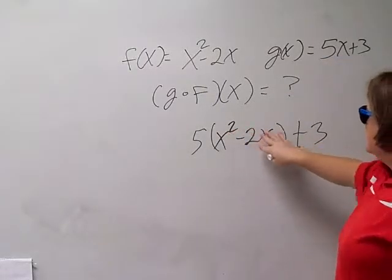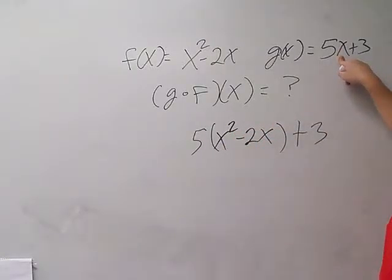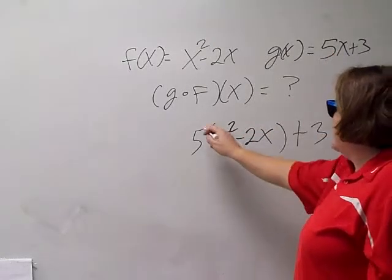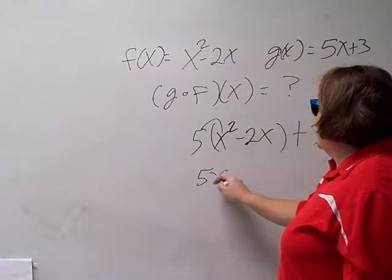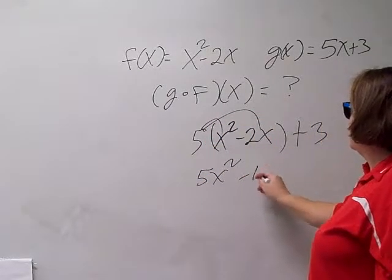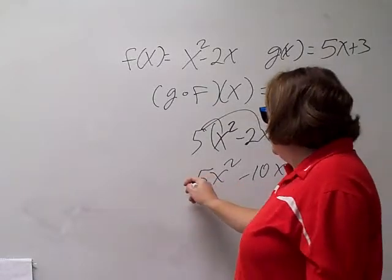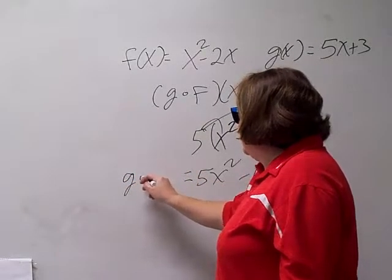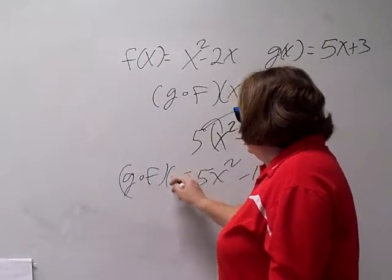So this f went into the g. Okay, we can clean that up now. That gets me 5x squared minus 10x plus 3. So that is g of f of x.